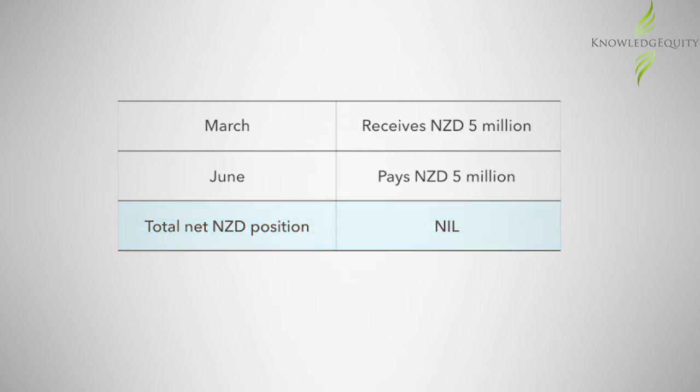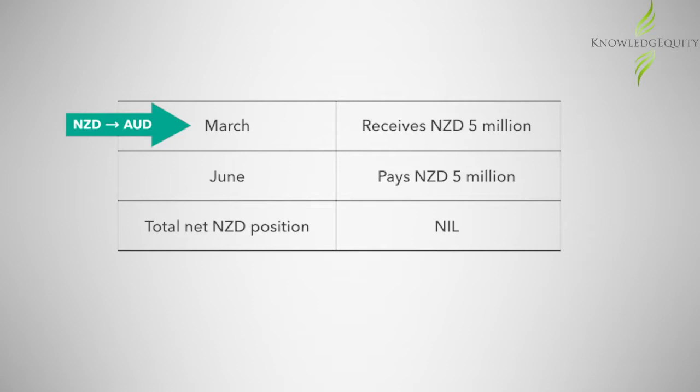Assume the organization did not have a New Zealand dollar bank account. The organization would need to convert the New Zealand dollars to Australian dollars in March, and then convert the Australian dollars back to New Zealand dollars in June in order to make the June payment, and so it would be exposed to currency movements during that period.